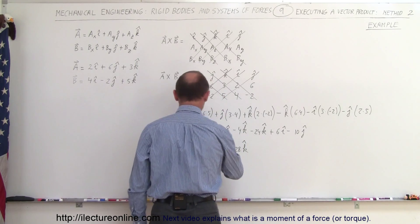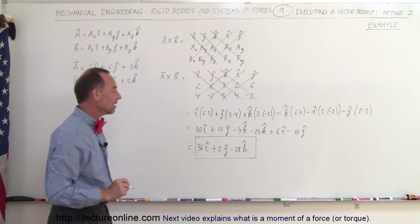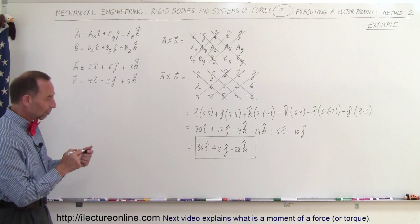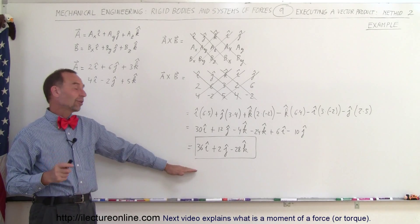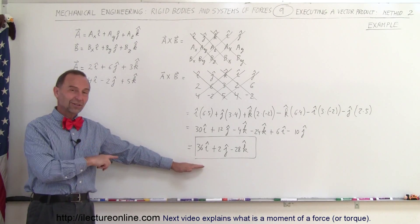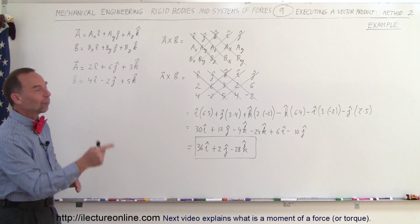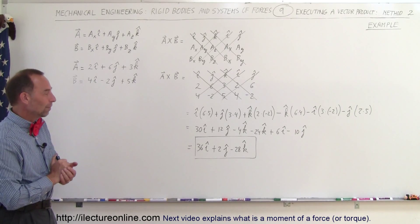And this here is indeed the result of A, the vector A multiplied times vector B using the vector product method, and as you check with the previous video, the result here is exactly the same as the result when we used method 1.